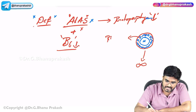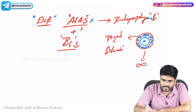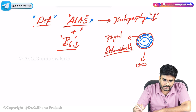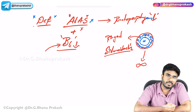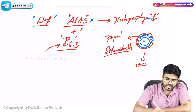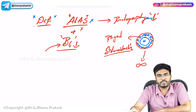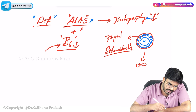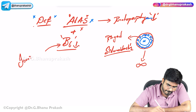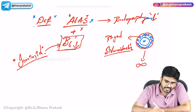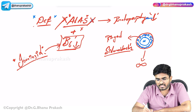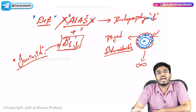B6 (pyridoxine) is the cofactor required for ALA synthase to function. If B6 is deficient, ALAS will not work, leading to no protoporphyrin and iron accumulation. A patient can develop B6 deficiency through use of the anti-tubercular drug isoniazid, which causes B6 deficiency and thereby causes sideroblastic anemia.